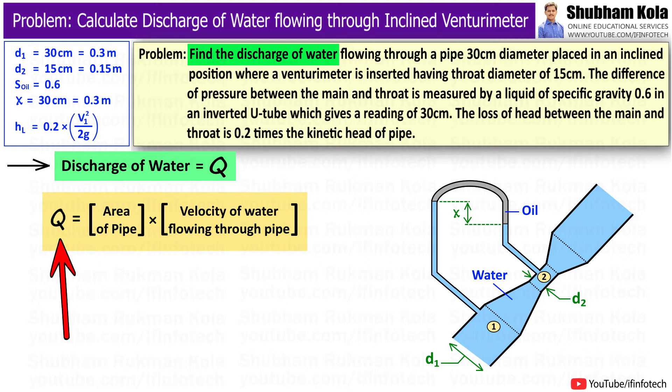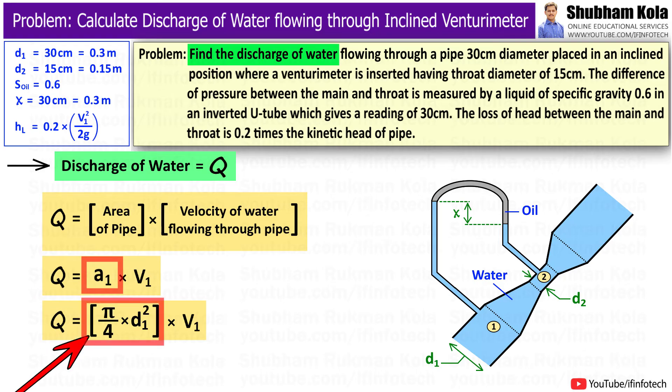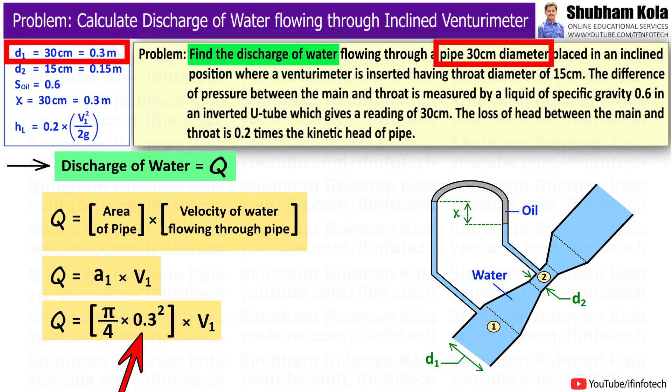We know that discharge equals area times velocity, so Q equals a1 times v1, where a1 is the area of pipe at section 1, which is pi by 4 d1 squared, where d1 is 0.3 m.